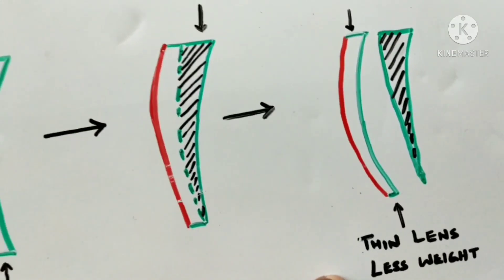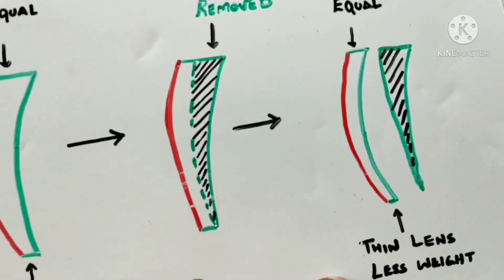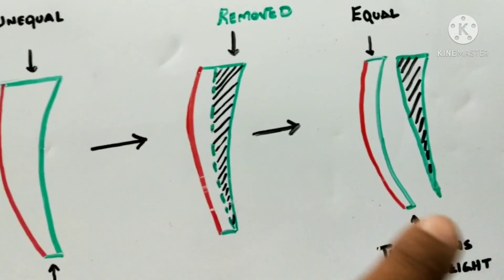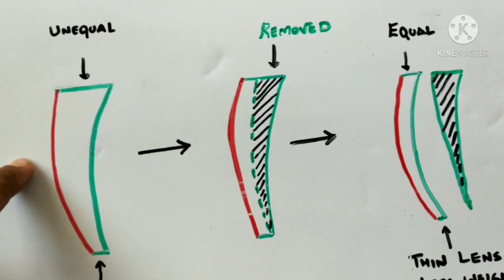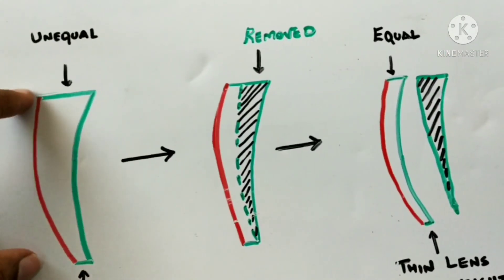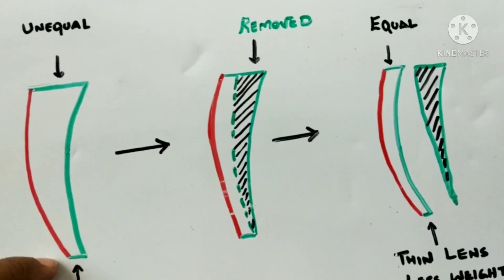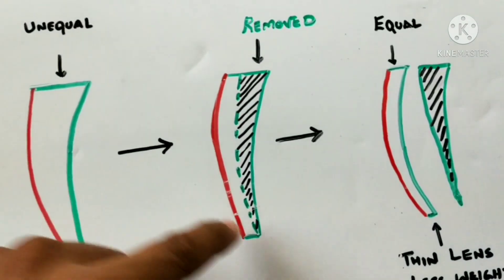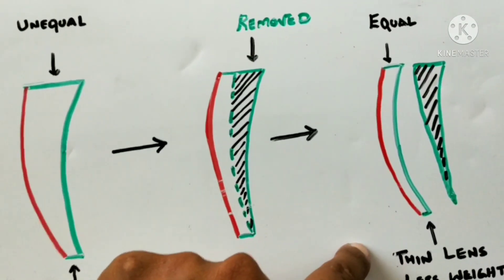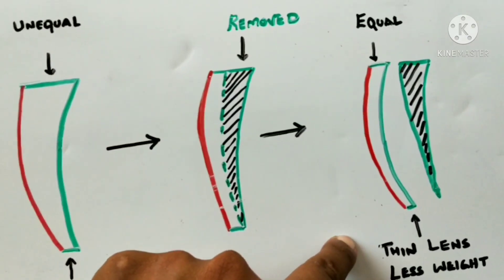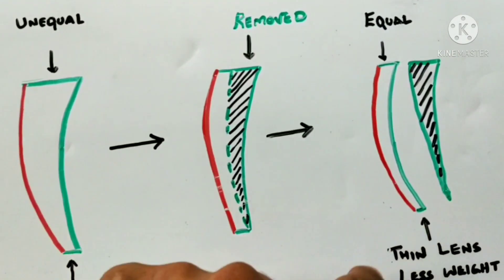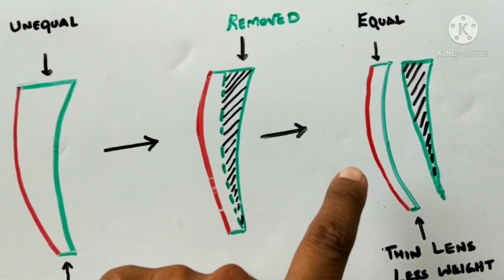A basic progressive lens will have a thicker portion at the top and thinner portion at the bottom. As we do prism thinning or equi-thinning, progressive lenses will become almost equal thickness at the top and the bottom.